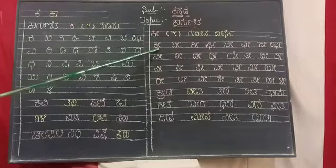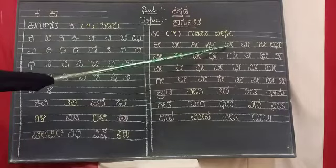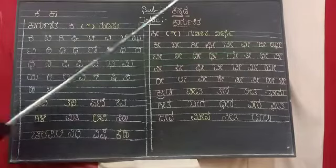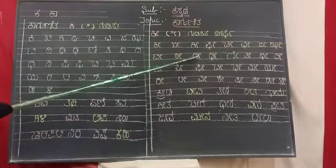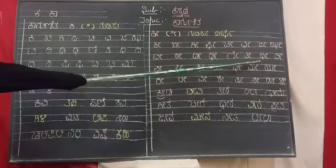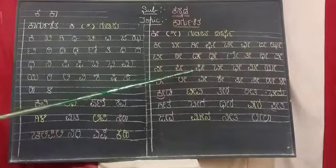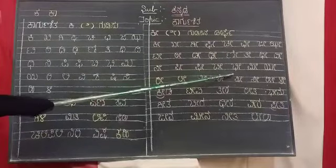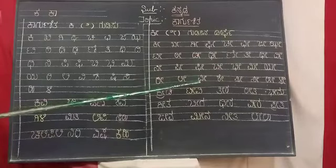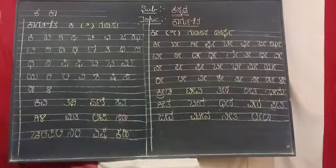Khi, Khhi, Ghi, Ghhi, Chi, Chhi, Ji, Jhi, Ti, Thi, Di, Dhi, Ni, Thi, Dhi, Ni, Pi, Phi, Bi, Bhi, Mi, Yi, Ri, Li, Vi, She, Shi, Si, Hi, Li.